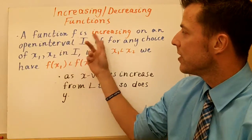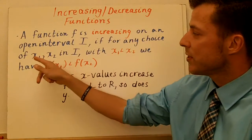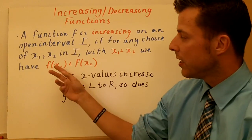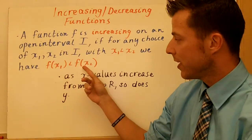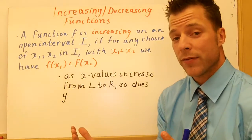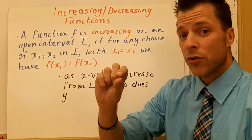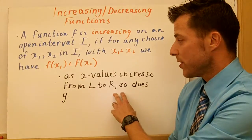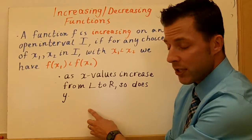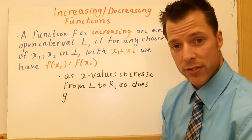It says if a function is increasing on an open interval I, and for any choice of x1 and x2 in that interval, x1 is less than x2, then the output of x1 has to be less than the output of x2. What this means is if you look on some interval and you move from left to right, as you increase your x values, your y values should increase. I read a graph like you read a book from left to right — if x is increasing and your y values are increasing, then you know the function's increasing.